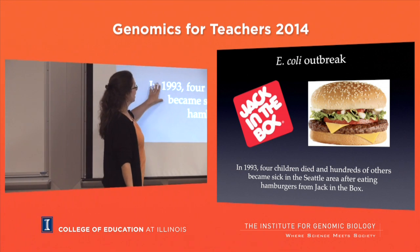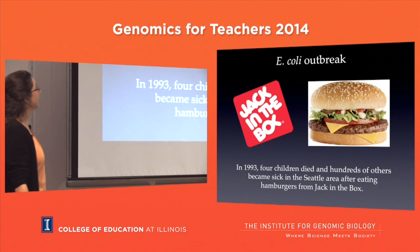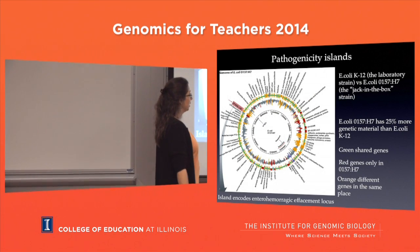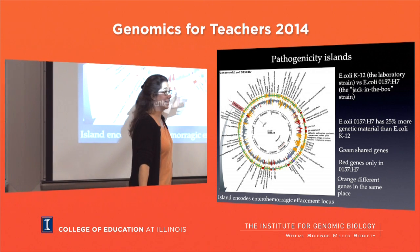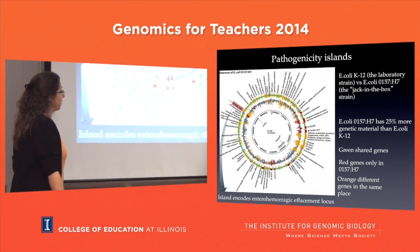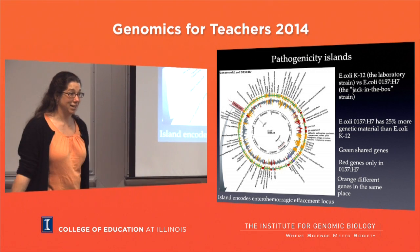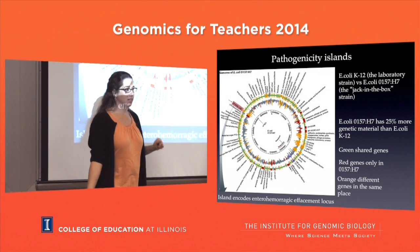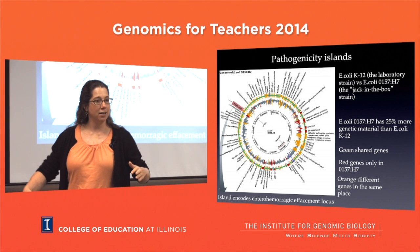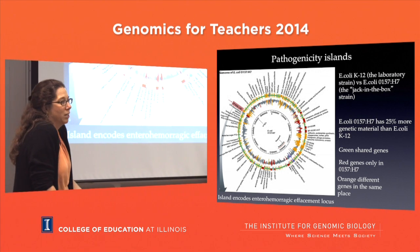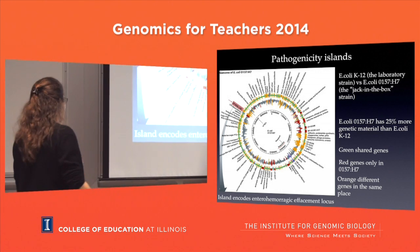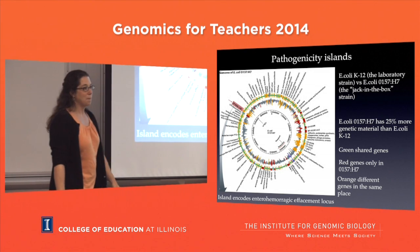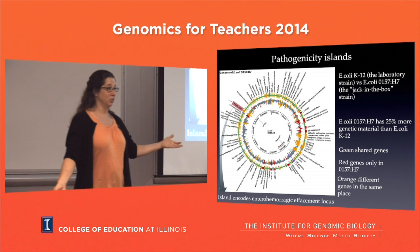In 1993, four kids died and hundreds got sick from the Jack in the Box E. coli outbreak. They sequenced the E. coli strain O157:H7 present there and compared it to the lab strain. They found this strain has 25% more genetic material than the lab strain - 25% of its genome that the E. coli we work with doesn't have. One of those islands of genes encodes the function that makes this version of E. coli a pathogen.